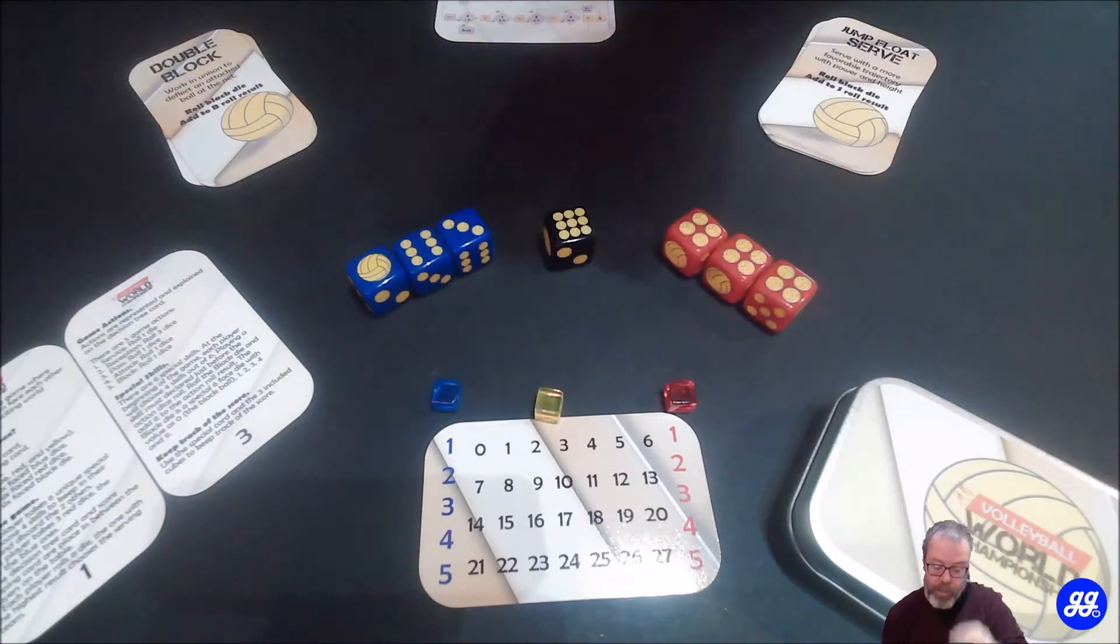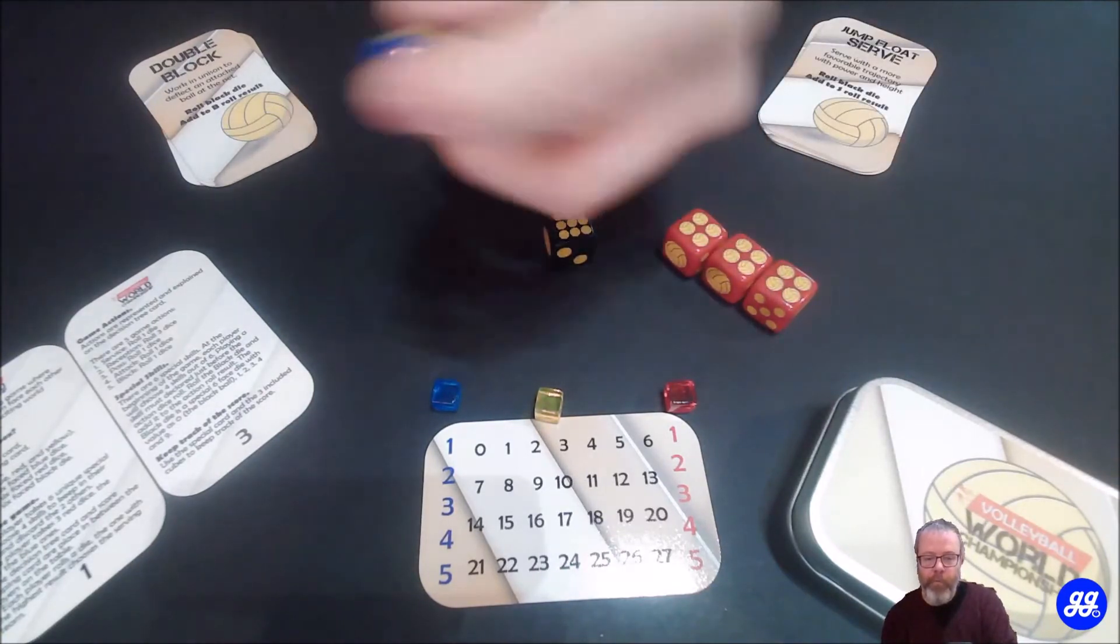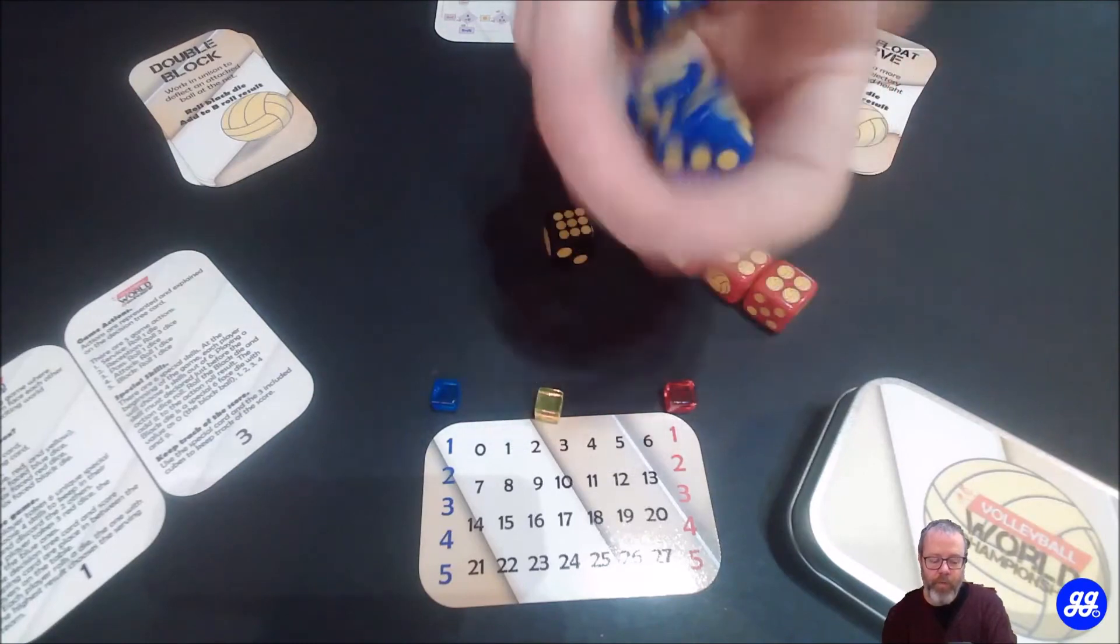So when you do an action, it's always one die, except for the reception of the ball, which is three dice.